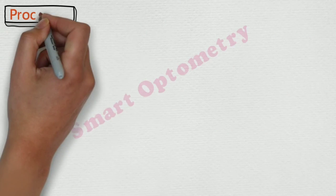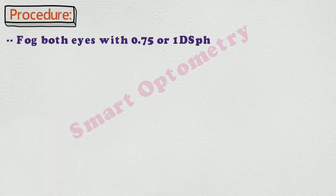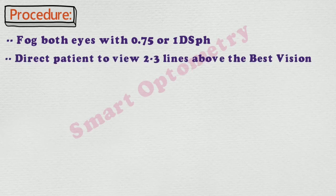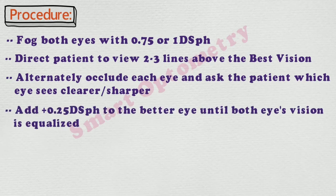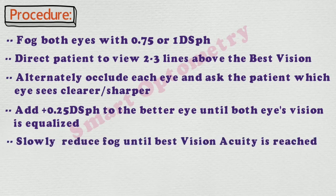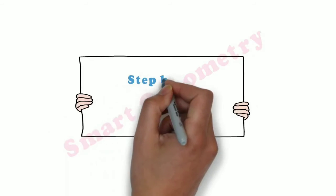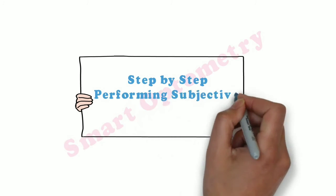Fogging procedure. Fog both eyes with +0.75 or +1.00 diopter spherical. Direct the patient to view two to three lines above the best vision. Alternately occlude each eye and ask the patient which eye sees clearer or sharper. Add +0.25 diopter spherical to the better eye until both eyes' vision is equalized. Slowly reduce fog until best visual acuity is reached.